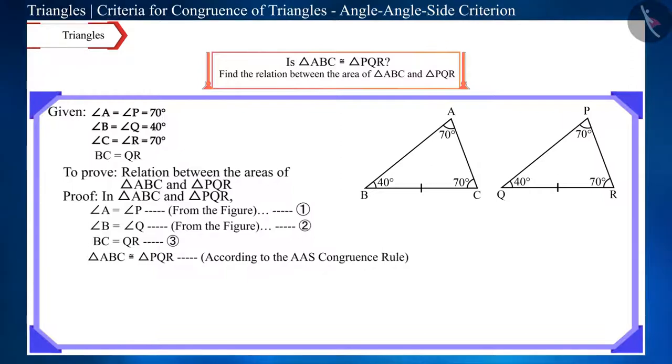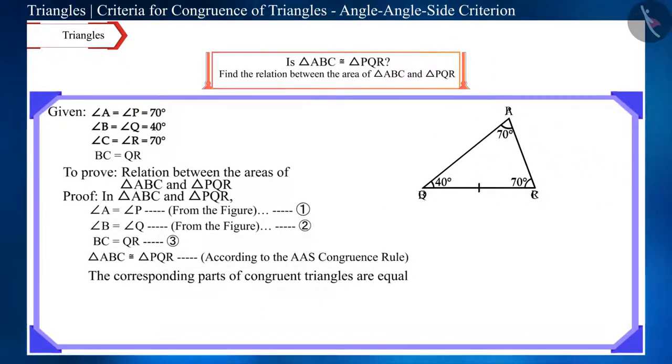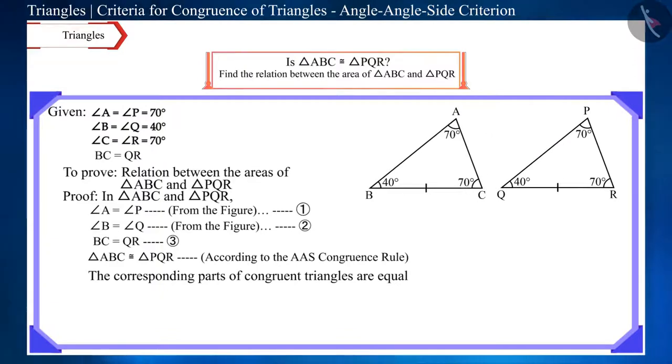Friends, we know that corresponding parts of congruent triangles are equal. That is, these two triangles will overlap each other completely. Now we can say that these two triangles occupy the same space, so their area will be equal. We can write it in this way.